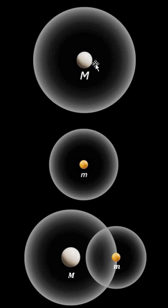So gravitational field is simply the modified space around a mass. It depends on the mass of the object — the greater the mass, the greater the gravitational field — and as we move closer to the mass the intensity of the gravitational field increases, and as we move away it decreases.